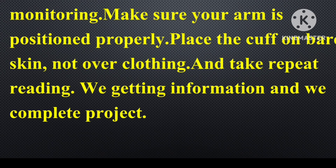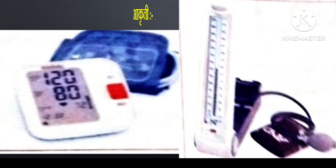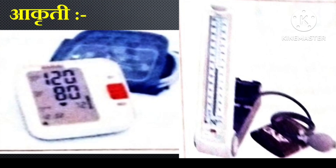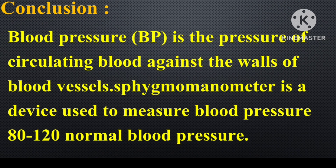We gathered information and completed the project. This is the figure of the digital blood pressure apparatus. Blood pressure is the pressure of circulating blood against the wall of blood vessels. A sphygmomanometer is a device used to measure blood pressure. 80 to 120 is the normal blood pressure range.